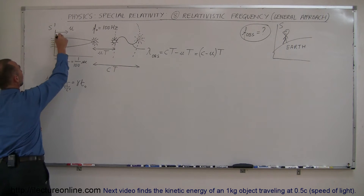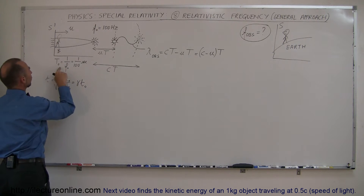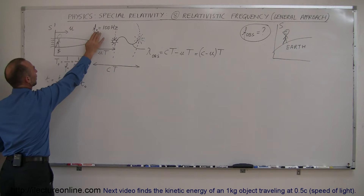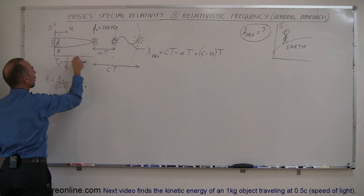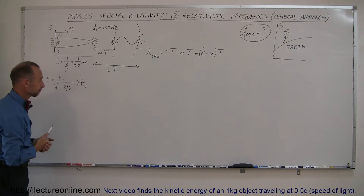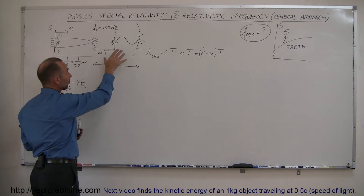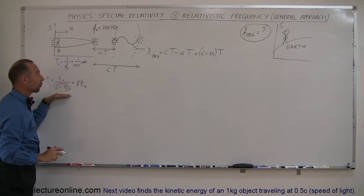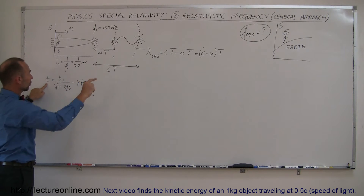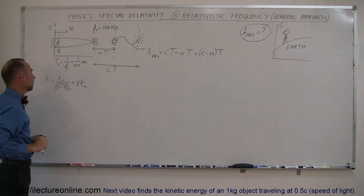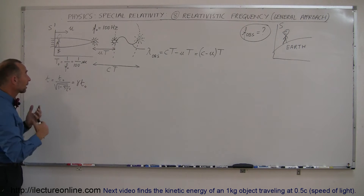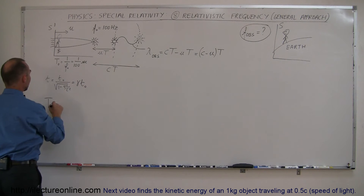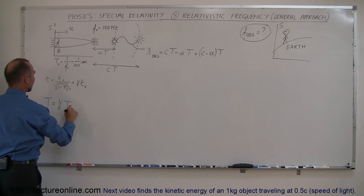The period as observed by the person on the spaceship — let's say that's Observer B — is equal to simply 1 over F, the frequency of the light on the spaceship. So Observer B sees the frequency at 100 Hertz and the period is 1/100 of a second. But because the spaceship is moving very fast, time events differ for the stationary observer: the time as seen by the Earth observer equals the spaceship observer's time divided by the square root of 1 minus V² over C², or gamma times T-naught. So the period seen by Earth equals gamma times the period seen by the spaceship observer.